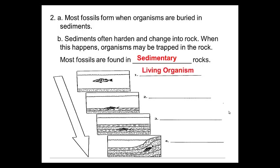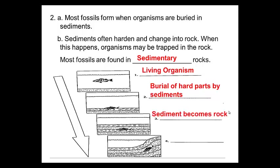Step one: we have our fish, our living organism living under the sea. Step two: that fish dies and starts to get buried. The hard parts remain, so we have burial of the hard parts by the sediment. The soft parts usually decompose. Step three: all those loose sediments now become solid sedimentary rock with the fish bones still inside. Step four: uplifting, weathering, and erosion now expose that fossil that was once deep underground, and now it's found up on the land.